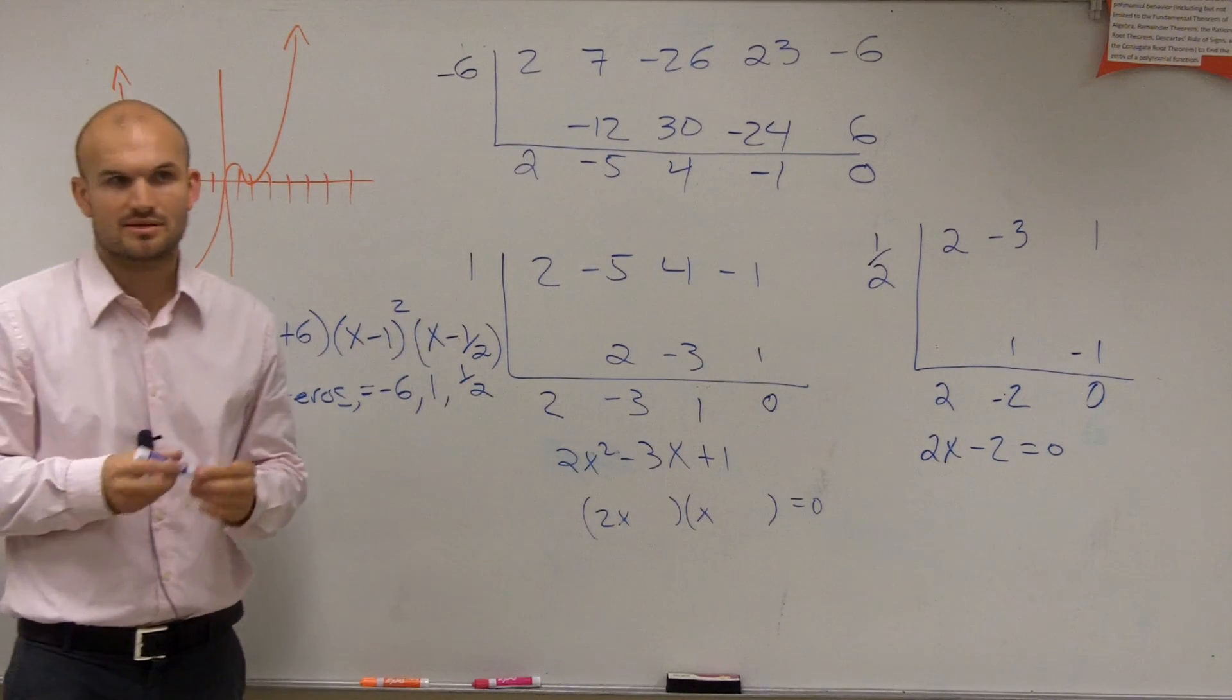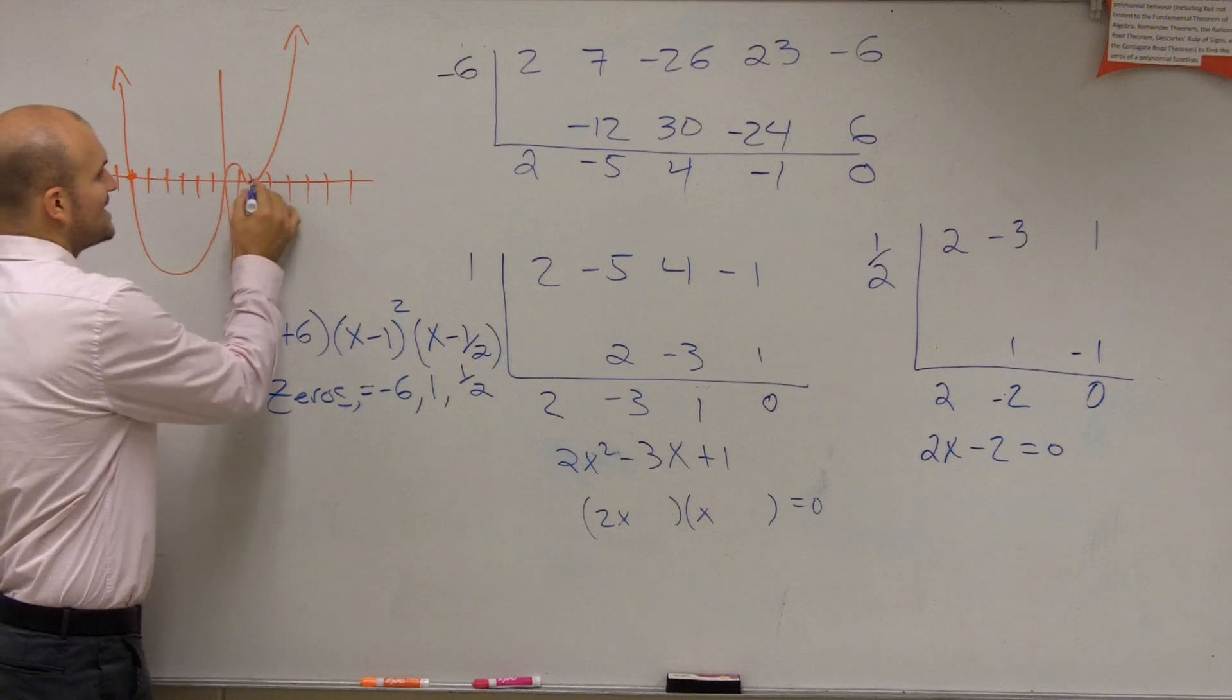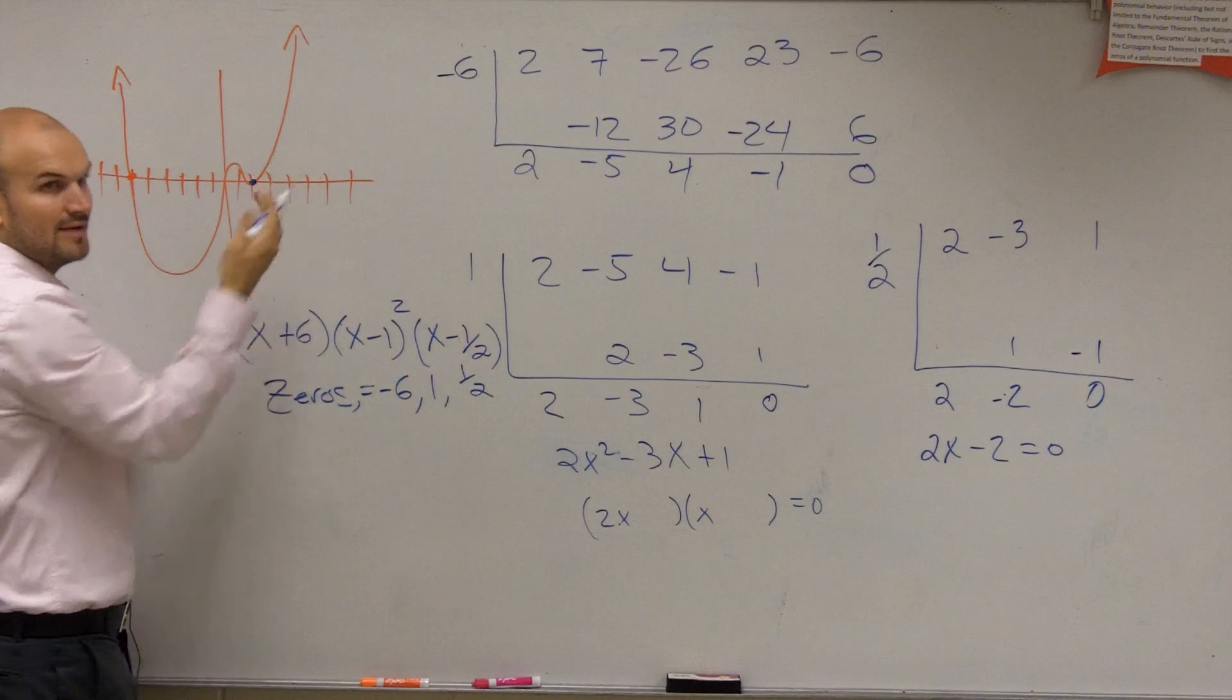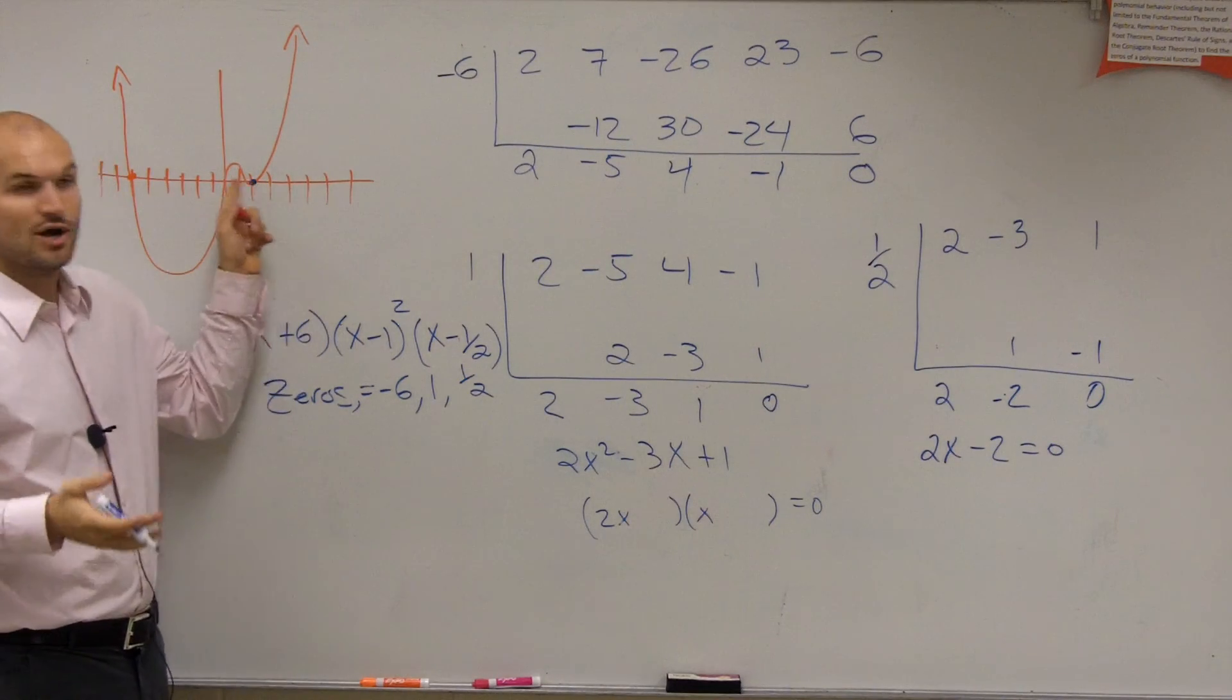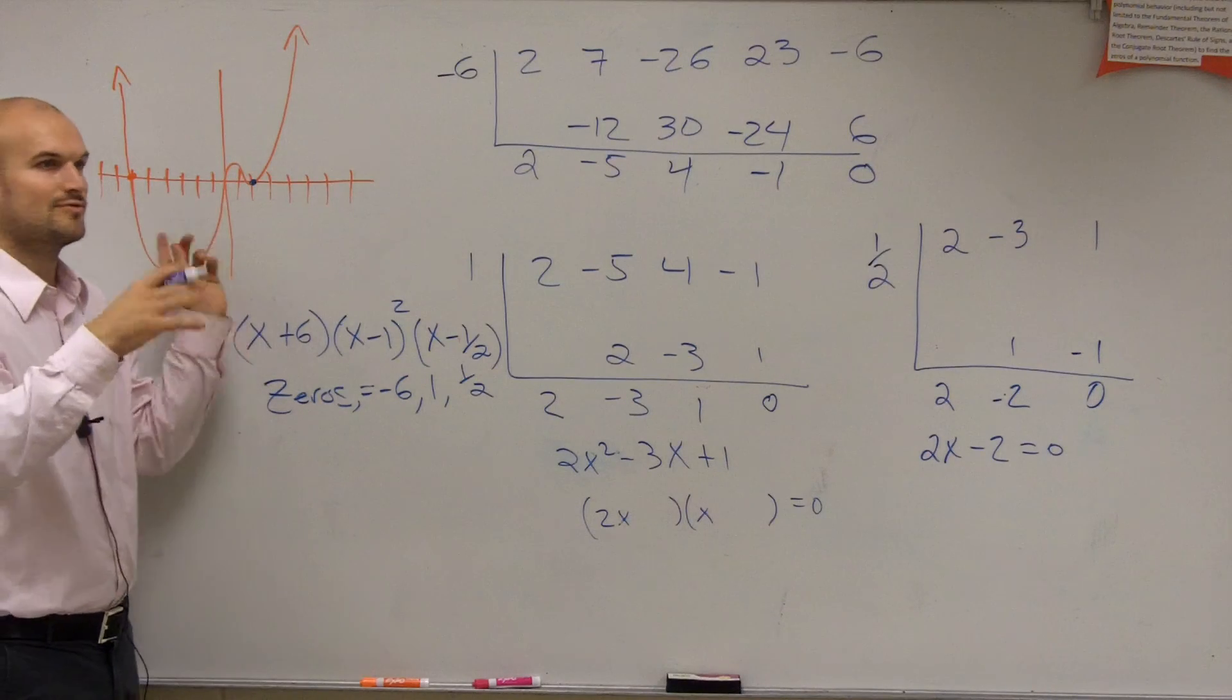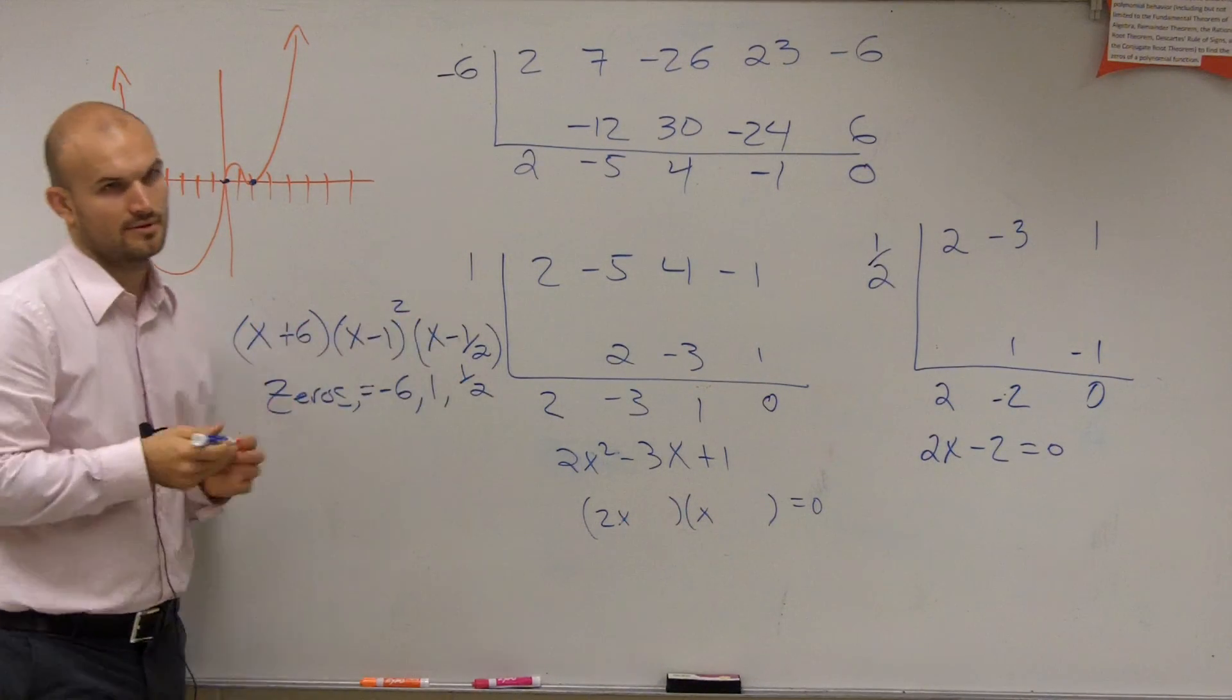Remember, we were talking about multiplicities. That means, you guys notice right here, since it rebounds, I know that positive 1 had an even multiplicity, because it rebounds. Remember we talked about multiplicity? So you guys should know automatically there, I'm going to have whatever that zero was, it's going to be a multiplicity of 2, because it rebounds. These two, it crosses, so they're odd multiplicities.